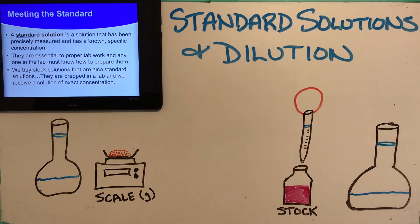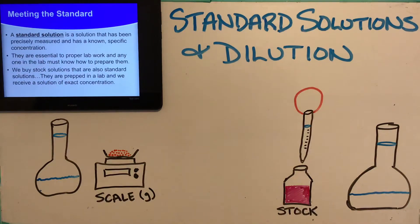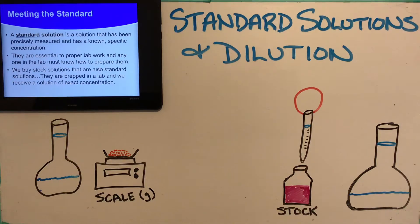Those stock solutions are also standard solutions. When we buy them, we buy a certain material — say nitric acid — and we can buy 3 molar, 5 molar, or 12 molar nitric acid. Whatever they label it as, that's what you can trust is in that container when they ship it to us.